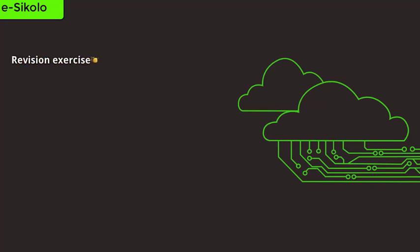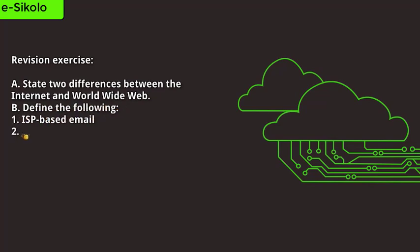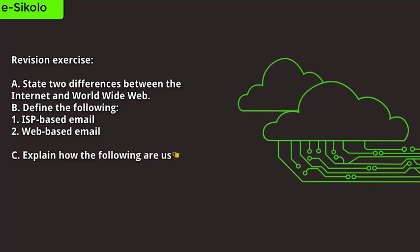Revision exercise. A. State the difference between the internet and the World Wide Web. B. Define the following: 1. ISP-based email. 2. Web-based email. C. Explain how the following are used: 1. Search engines. 2. Web browsers.